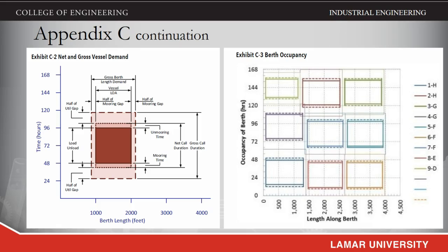As such, the number of berths in the available berth length is a function of the classes of vessels that call at the berth. A sample table with berth occupancy demand is shown in Exhibit C3.